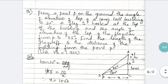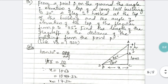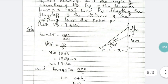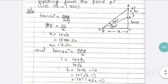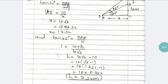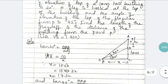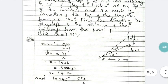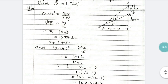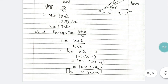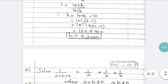Question 90 is an application of trigonometry. Read the question carefully, draw the correct diagram, and apply the appropriate trigonometric formula. Here tan θ is applicable: tan θ = opposite/adjacent. Substitute the values correctly and you will get the final answer as 7.32 meters.